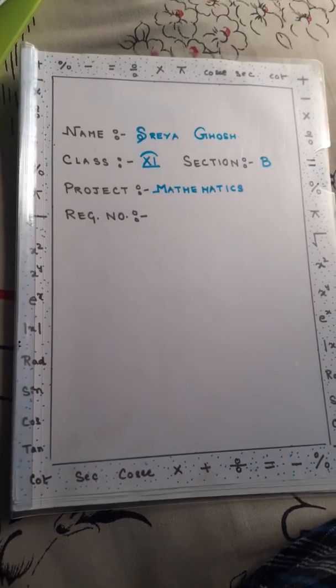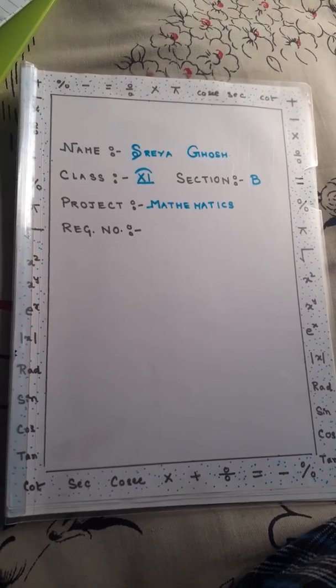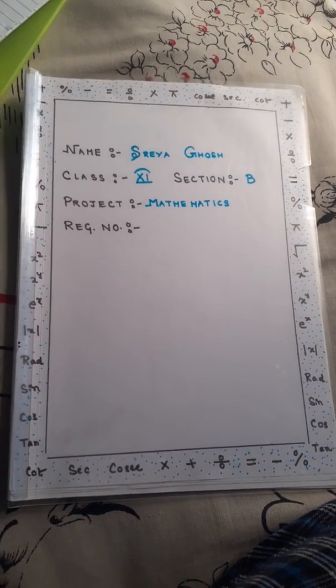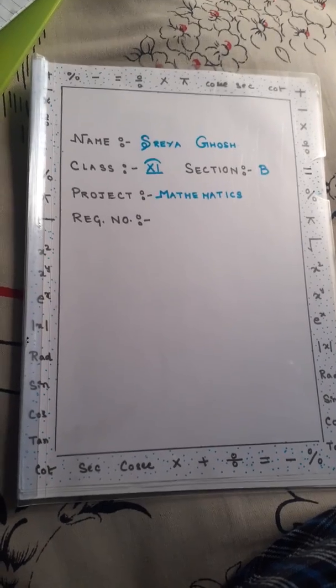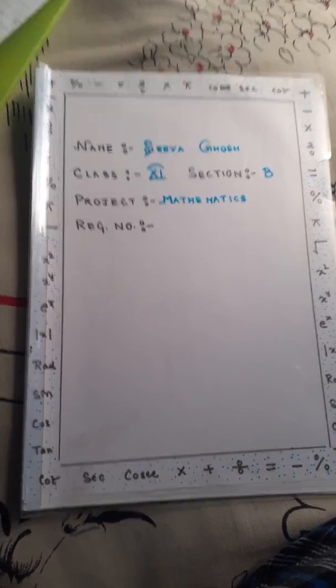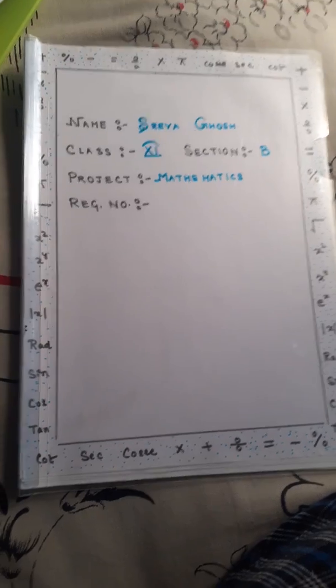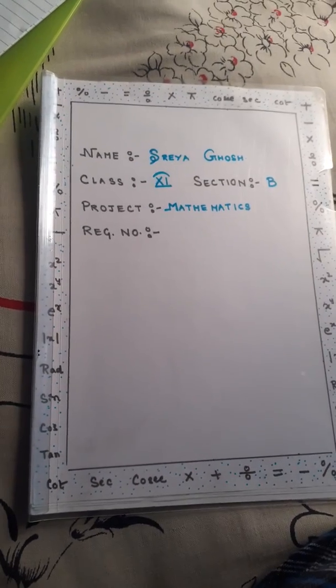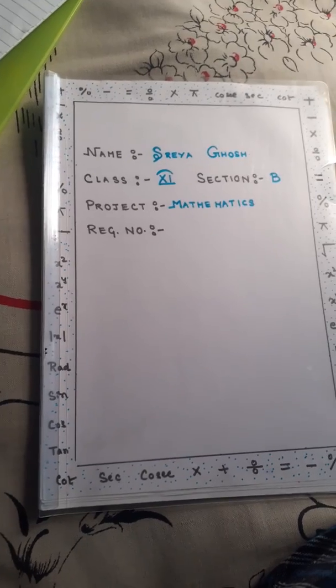I am proceeding with my project. As you can see, I have used a channel file and white A4 pages. In the first page, I have written my name, class, section, project, and the registration number.